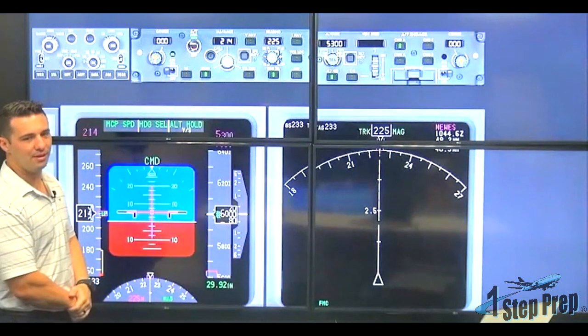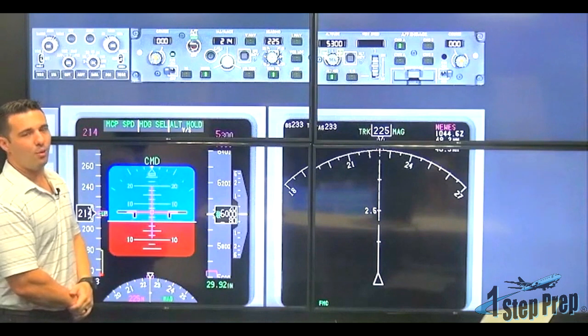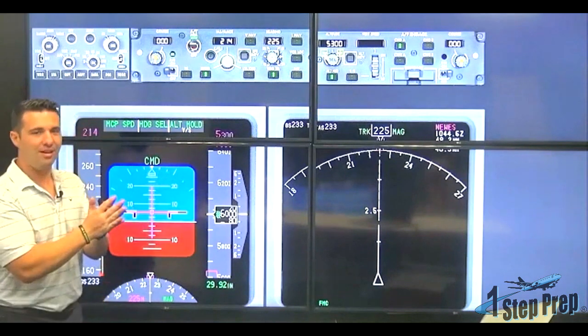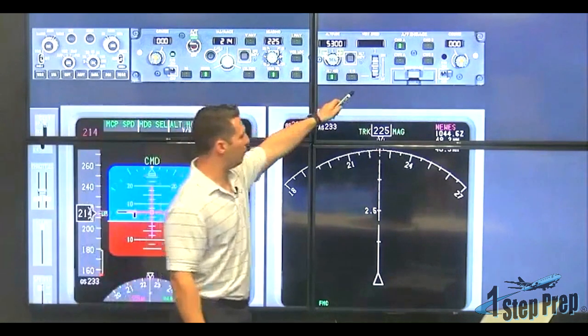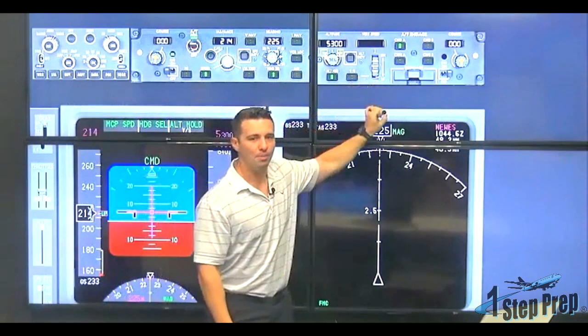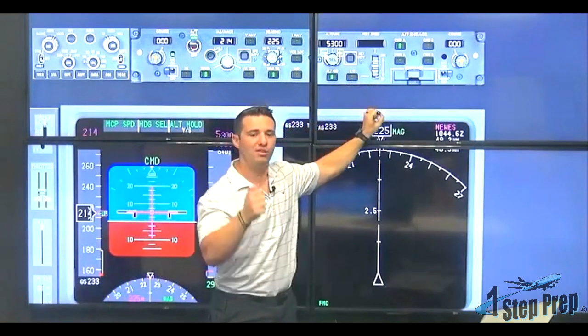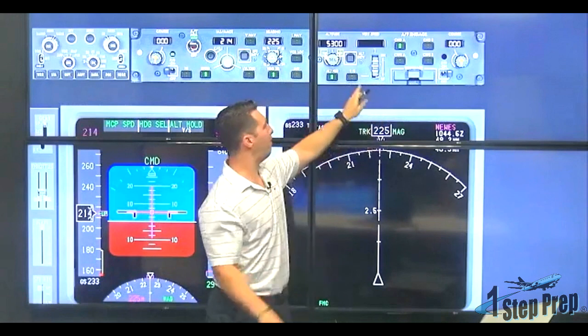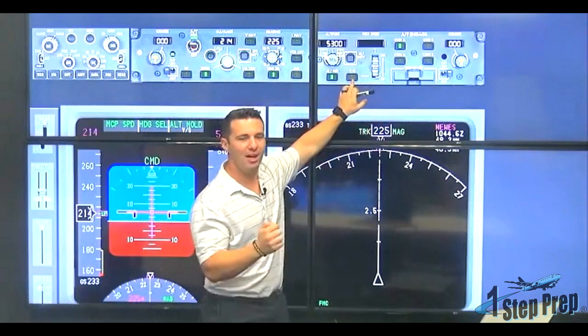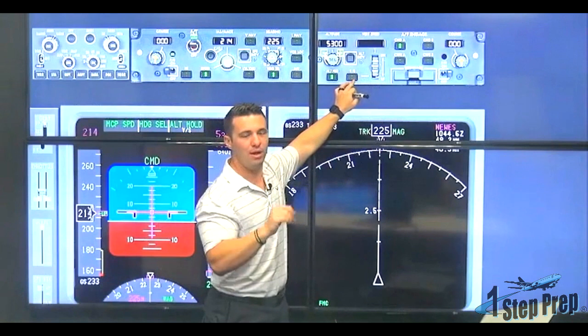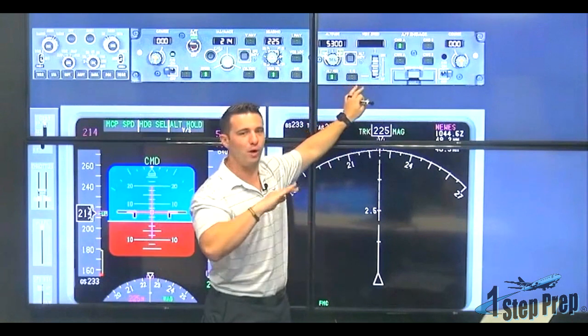VS, vertical speed. Now, what that means is that the vertical speed wheel is armed. All I have to do is roll the wheel. I don't need to push vertical speed. I just roll the wheel. The second I roll the wheel, the airplane goes into vertical speed mode right away.